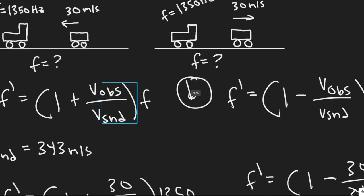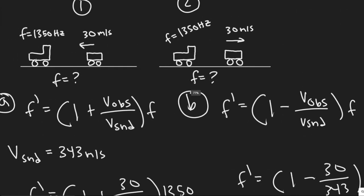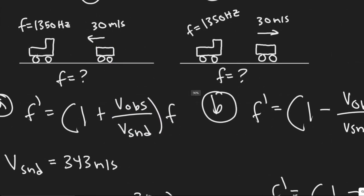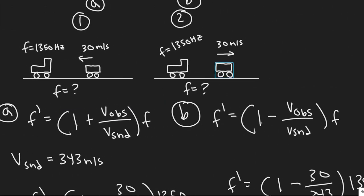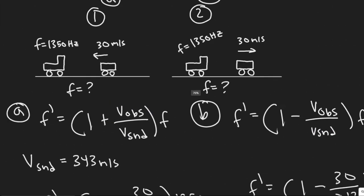All right, so keep in mind it's dependent on this velocity of our observer. So that's going to change it. If this was zero, notice if they were just both stationary, this would be zero, meaning this would be 1 times the frequency, it wouldn't change. So what's changing it here is the velocity of our observer. But it changes if we're going away. Obviously, it's going to decrease, which makes sense. And if we're going towards it, it's going to increase.